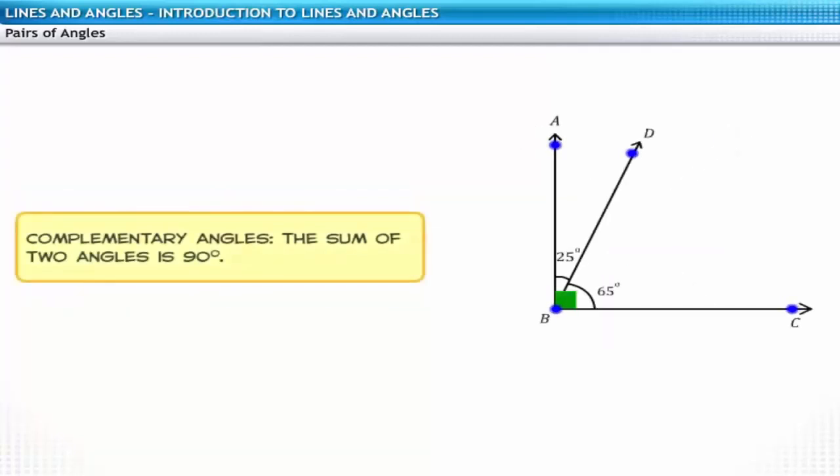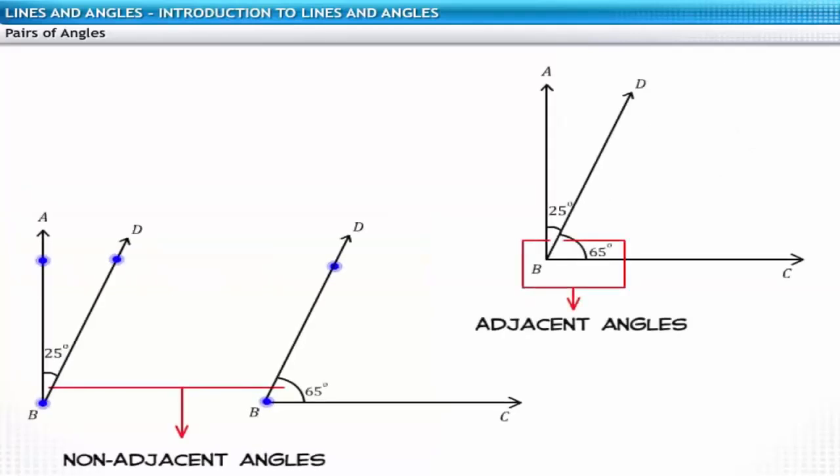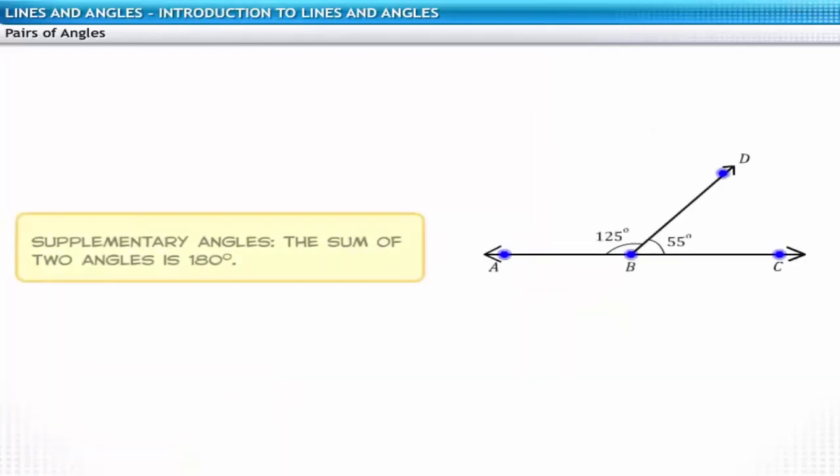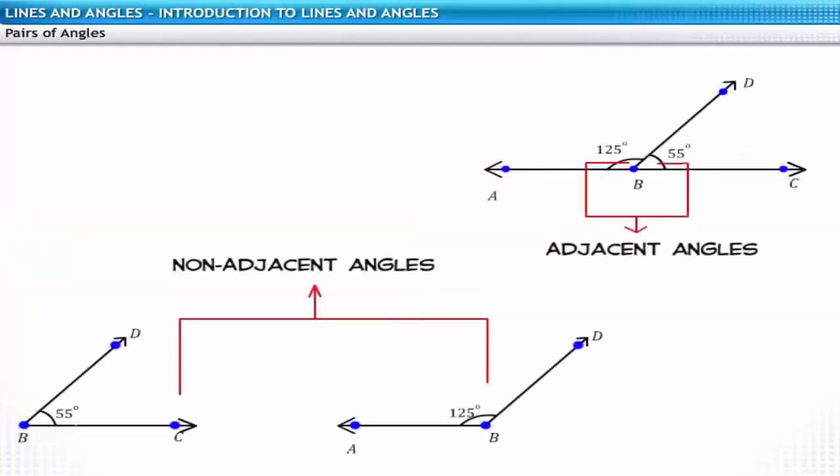Two angles are said to be complementary if their sum is 90 degrees. They may or may not be adjacent angles. Two angles are supplementary if their sum is 180 degrees. They may or may not be adjacent angles. Just as we have different types of pairs of angles, we have different types of lines too.